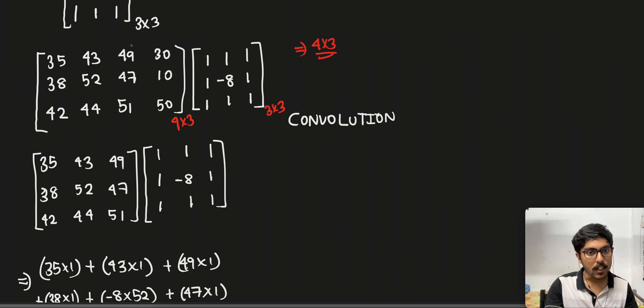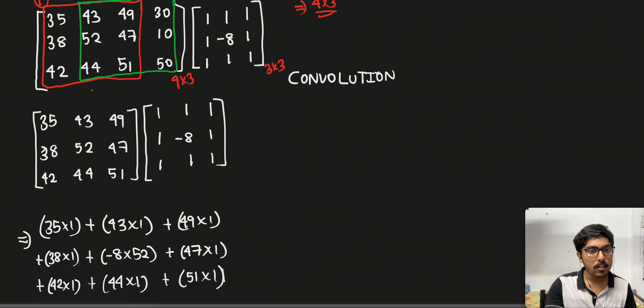So what we will do is first we will take this particular 3x3 image first and in the later part we will take this matrix for convolution. In the first part we have taken this particular matrix and then applied convolution.